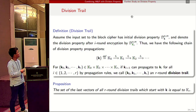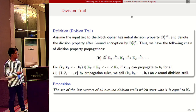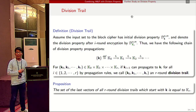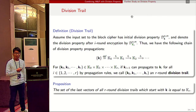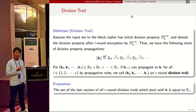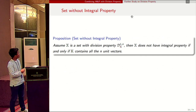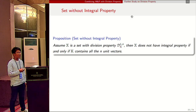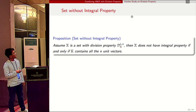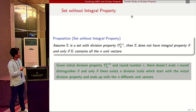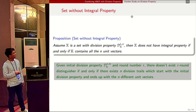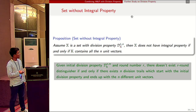Based on the definition of a division trail, the set of the last vectors of all r-round division trails starting with k equals K_r. So given an input division property, we do not need to compute k_0, k_1, k_2 step by step. We only enumerate all division trails and check the last vectors. This proposition gives a sufficient and necessary condition for a set to have no integral property: X does not have an integral property if and only if K_r contains all n unit vectors. Therefore, there does not exist an r-round distinguisher if and only if there exist n division trails starting with the initial division property k that end with the n unit vectors.